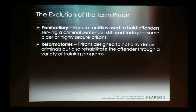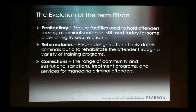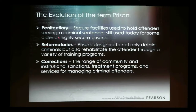Elmira, up in upstate New York, was one of our most infamous reformatories. When we shifted to this reform model, the idea was we had to provide more than just religious doctrine — we had to provide vocational training, teach people a skill, and provide academic training. We opened our facilities to provide a lot more for inmates to take advantage of. Today, we refer to the broader system as 'corrections,' which encompasses prisons, halfway houses, probation, parole, and much more.